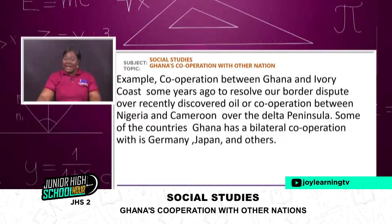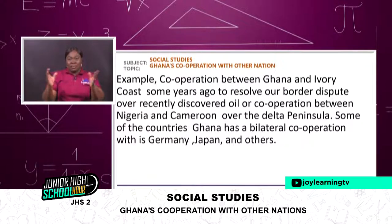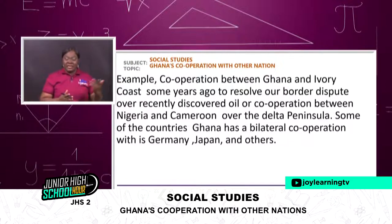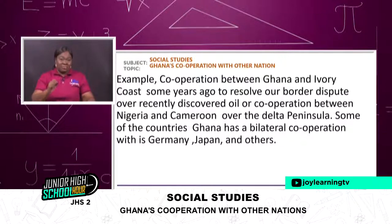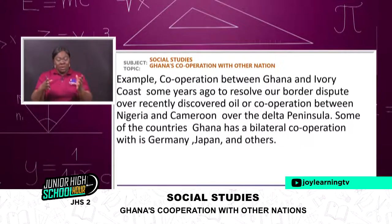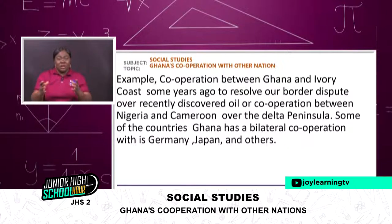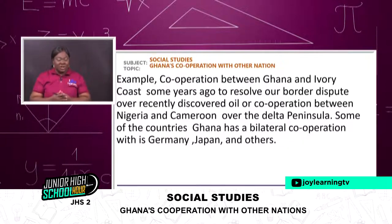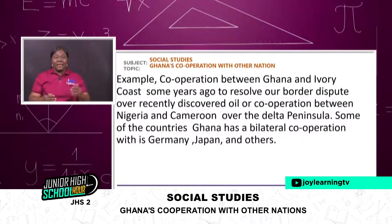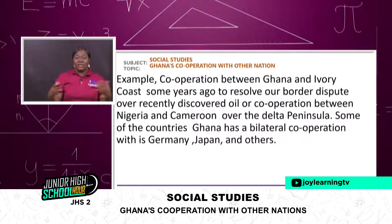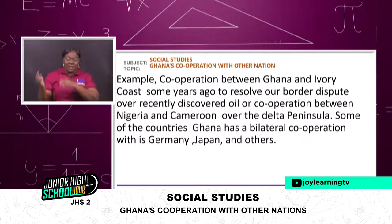For example, cooperation between Ghana and Ivory Coast — when we looked at the ECOWAS member states map, you saw Ivory Coast there. Some years ago, there was a cooperation between Ghana and Ivory Coast to resolve a border dispute, and also over recent oil disputes. There was also cooperation between Nigeria and Cameroon over the Bakassi Peninsula — they signed agreements or a treaty and there is peace now. Some countries Ghana has bilateral cooperation with include Germany and Japan. JICA and the Friedrich Ebert Foundation are all part of cooperation between Ghana and these international countries.